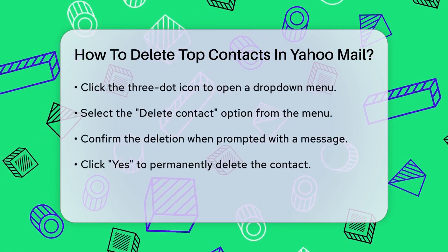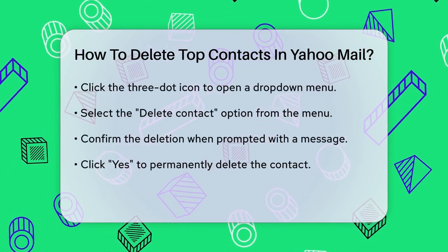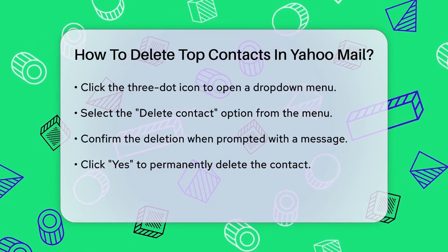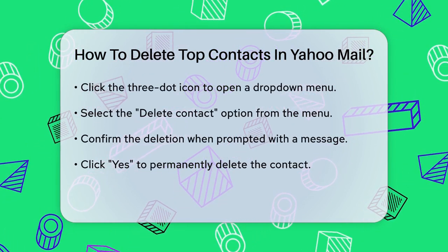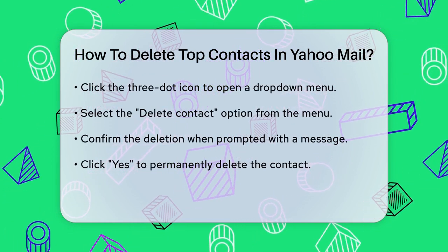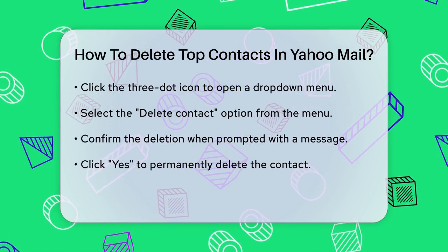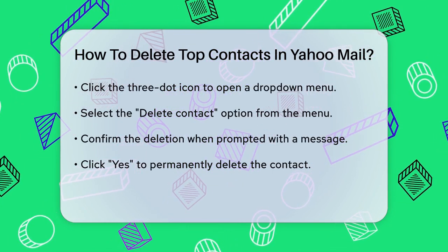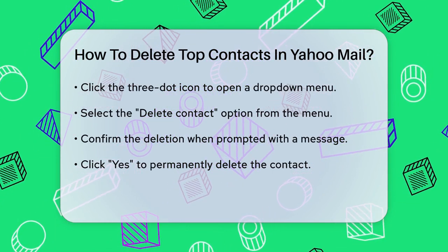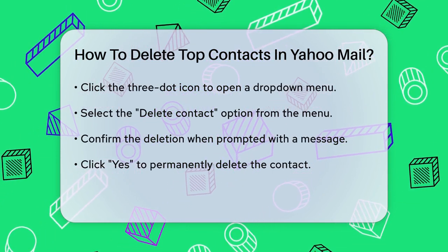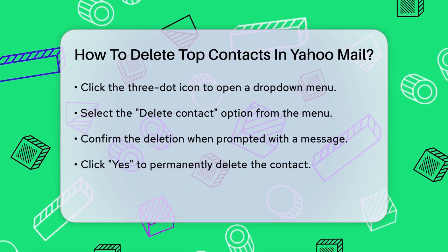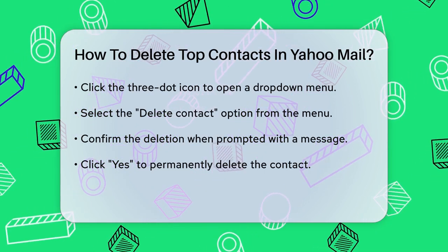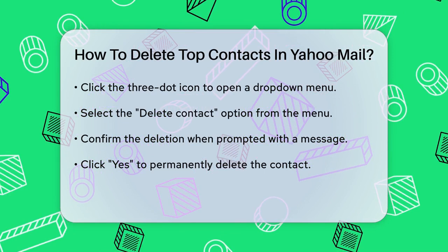After selecting the contact, you'll see a three-dot icon next to the details of the contact. Click on this three-dot icon and a drop-down menu will appear. From this menu, select the Delete Contact option. You'll be prompted with a confirmation message asking if you're sure you want to permanently delete this contact. Click Yes to confirm the deletion.